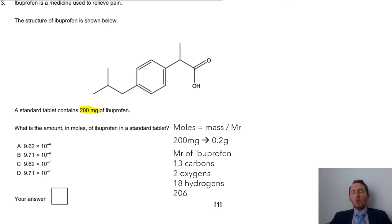Ibuprofen: we now need the Mr. We haven't been told the Mr, but we have been shown what ibuprofen looks like. This is where we've got to simply count it all up. We're going to count up how many carbons, how many hydrogens and how many oxygens we have. We've got 13 carbons, 2 oxygens, and then 18 hydrogens. You do 13 times by 12, you do 2 times 16, and then plus 18, you should get 206. Then if you do your 0.2 divided by 206, you get that answer there.